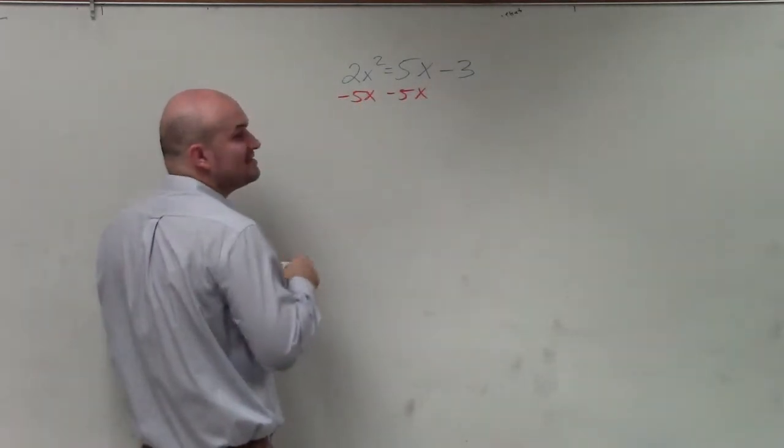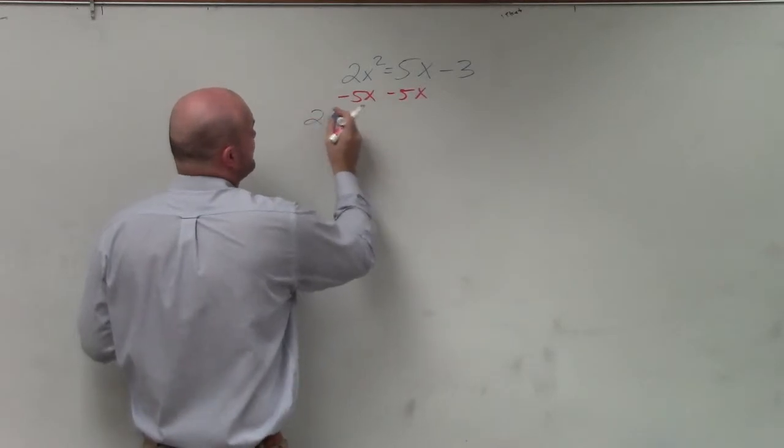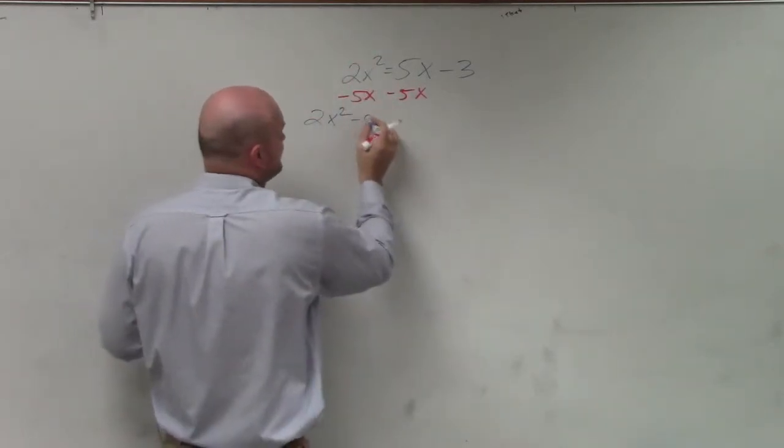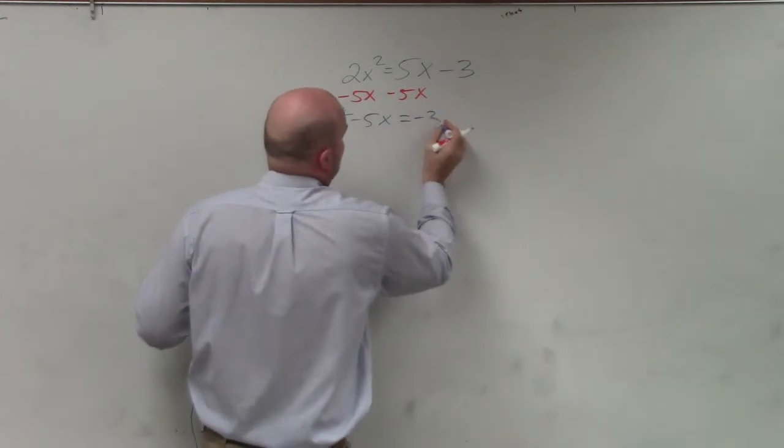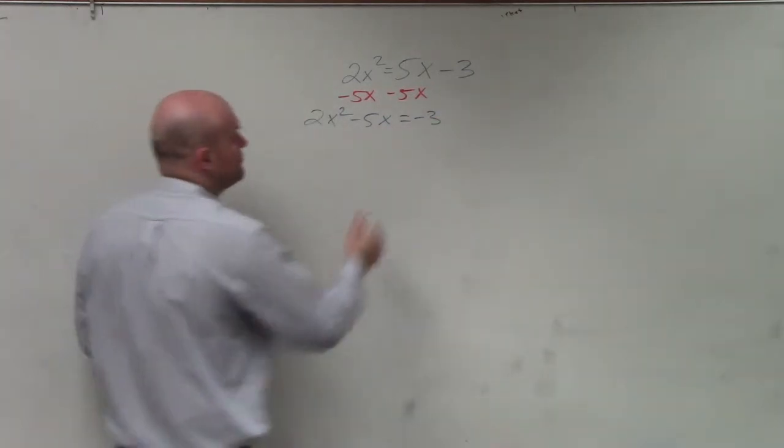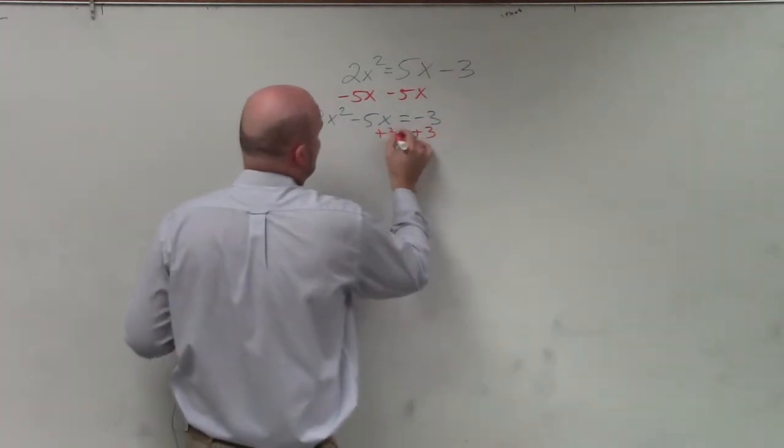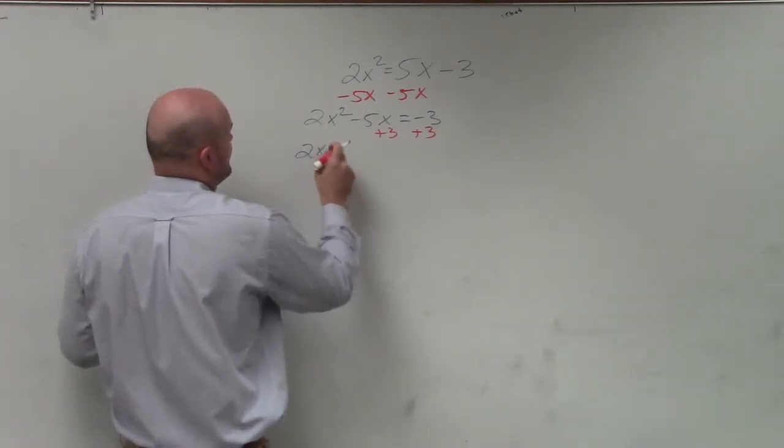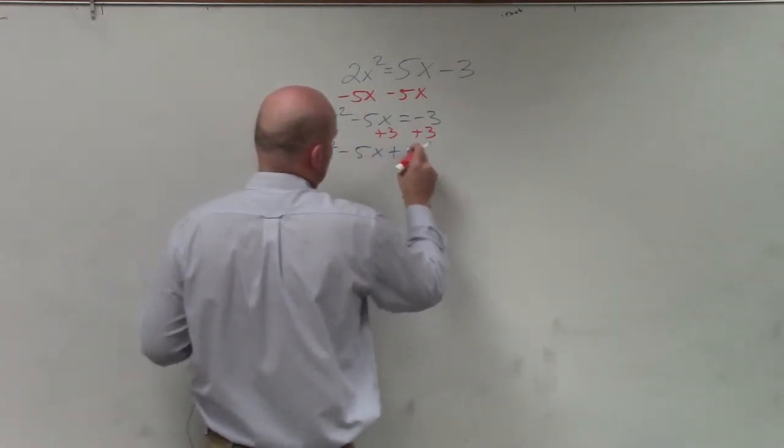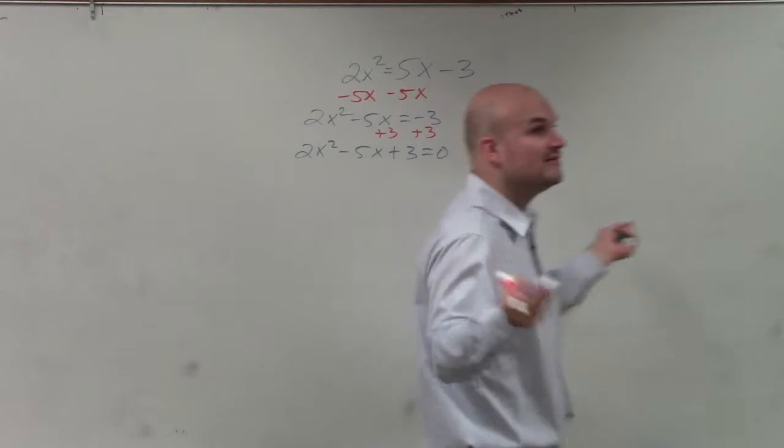I always like to make my x squared, my quadratic term, positive. So I always get it to the side where that term is going to be positive. So I have 2x squared minus 5x plus 3 equals 0. Everybody follow me?